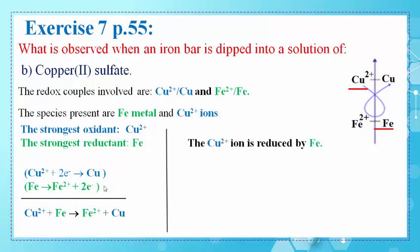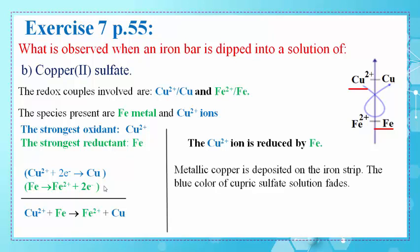In this reaction, Cu2+ ions are being reduced by Fe metal. Metallic copper is deposited on the iron strip, due to the reduction of Cu2+ to Cu. The blue color of the copper(II) sulfate solution fades since the Cu2+ ions are being reduced and their concentration decreases.